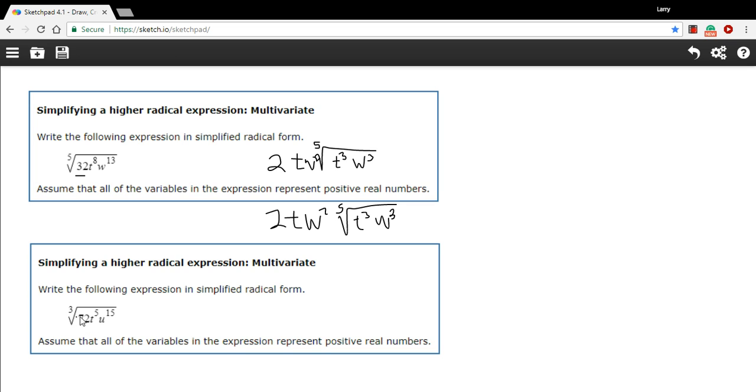And let's try another one here. We have the 3rd root of 72. And off the top of my head, I don't know that the 3rd root of 72 is some whole number. So let's do some factoring first with the 72. So 72 is 9 times 8. Aha.